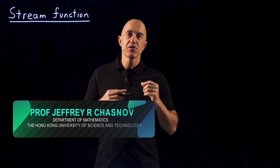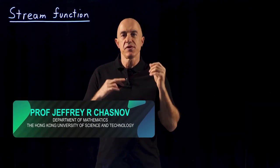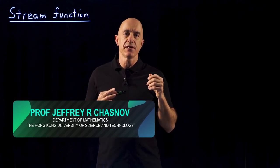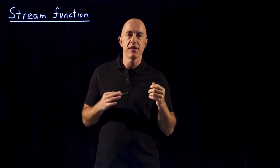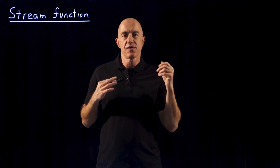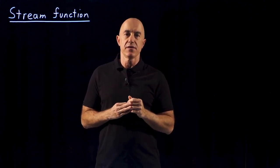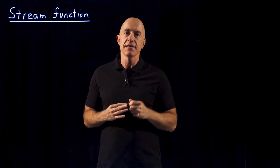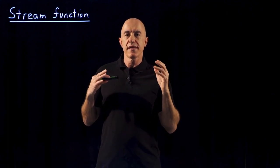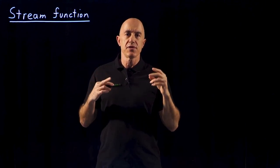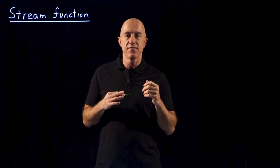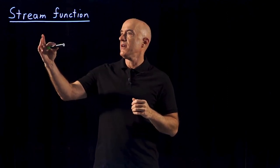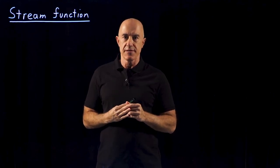From the Navier-Stokes equations, we derived the vorticity equation. In two dimensions, that reduces to an equation for the scalar vorticity field. But that equation depends on two components of the velocity field. We want to now reduce the two components of the velocity field to a single scalar field. That scalar field will be called the stream function.